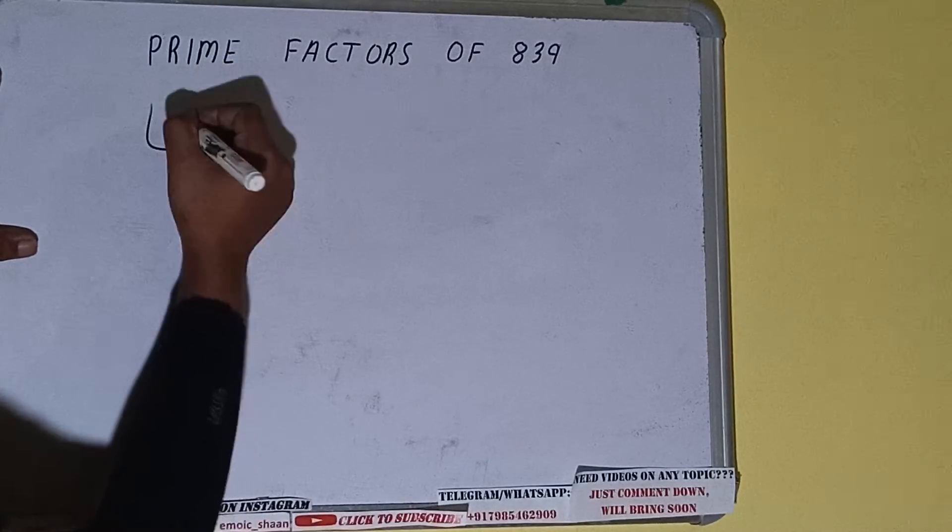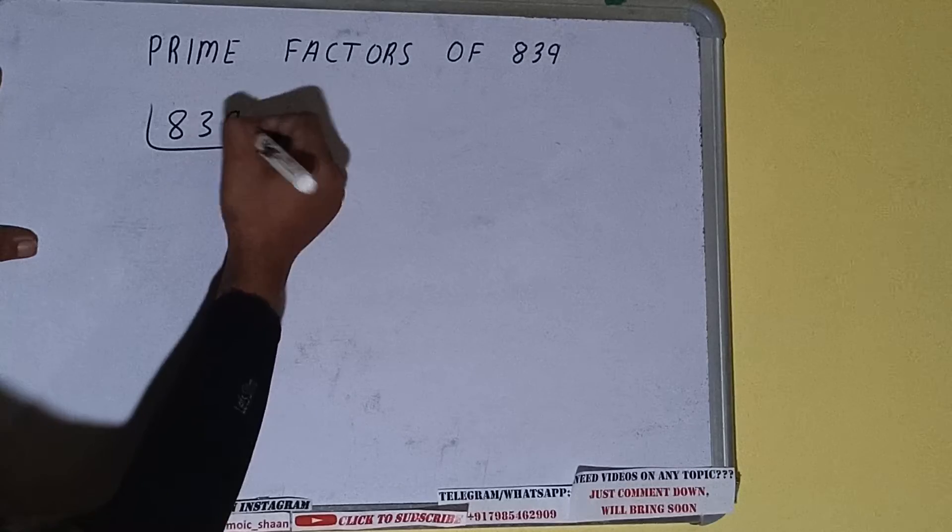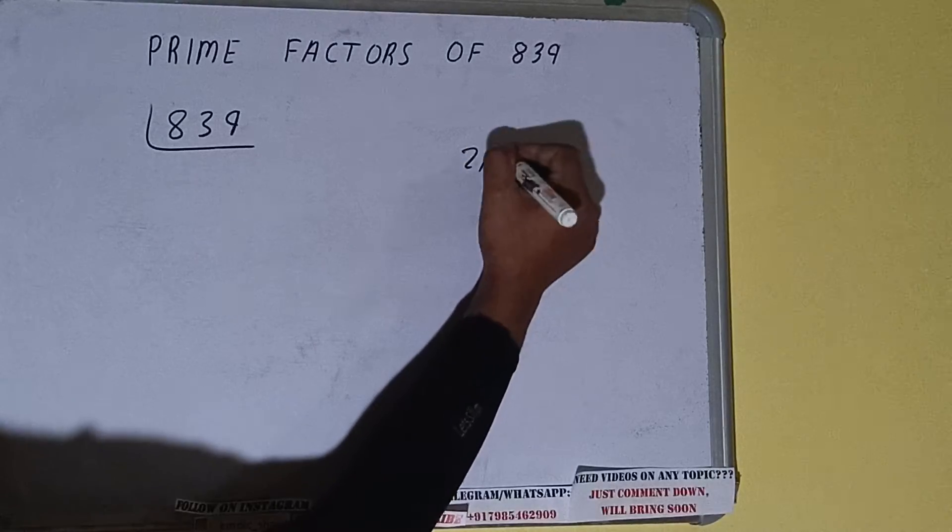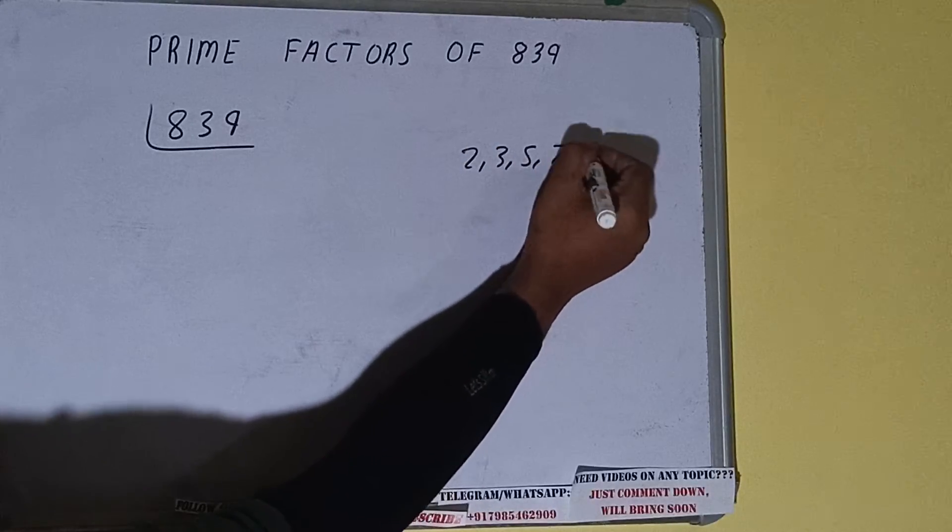First of all, we need to write the number like this. The next thing we need to know about is what are prime numbers. Prime numbers are numbers that are divisible by 1 and the number itself, like 2, 3, 5, 7, and so on.